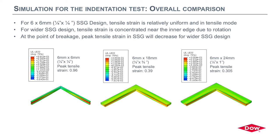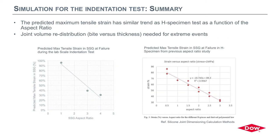Placing all three deformation modes side by side, you observe the difference in deformation influenced by aspect ratio. Tensile strain is always concentrated near the inner edge due to rotation. It's evident that at a certain point there is no benefit in continuing to increase the bite — we need to also increase the thickness to find the optimum. There is likely a joint volume redistribution needed: working less on bite and more on thickness. Still, this must not reduce the bite too much, since daily fatigue and movements need to be accommodated.